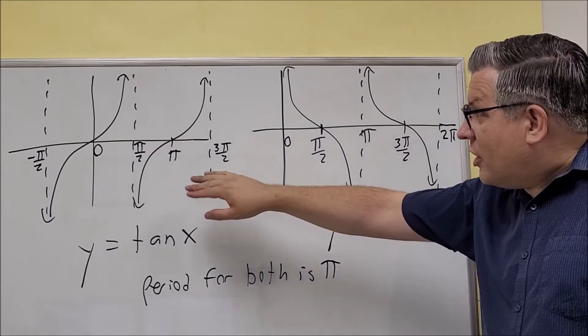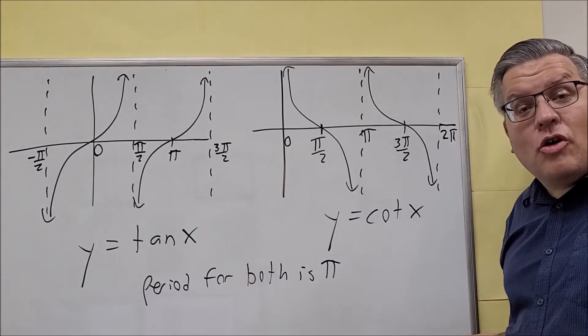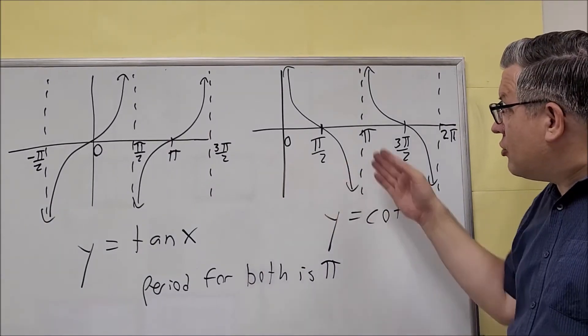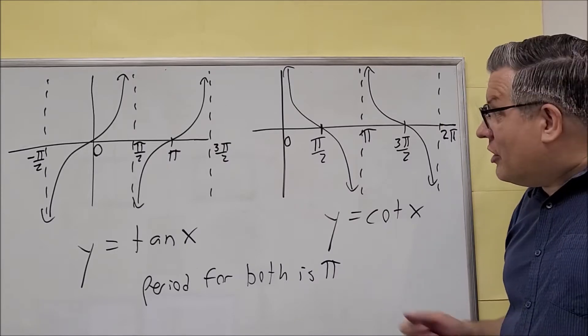You can also see that the graph is generally increasing. It's increasing as you go from left to right, whereas the cotangent graph would be decreasing as you go from left to right.